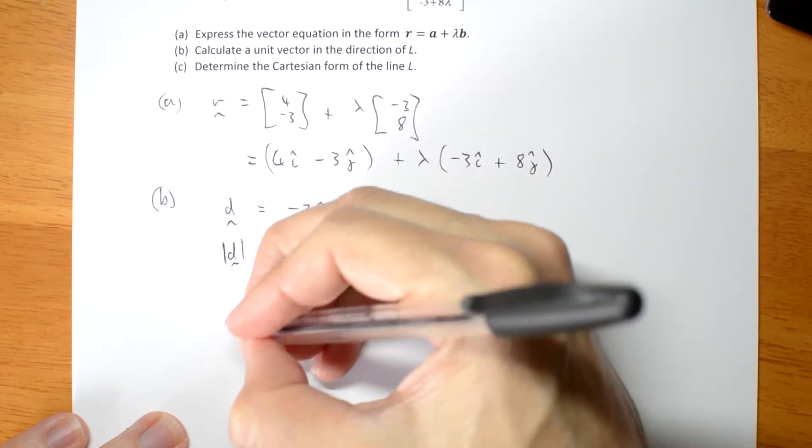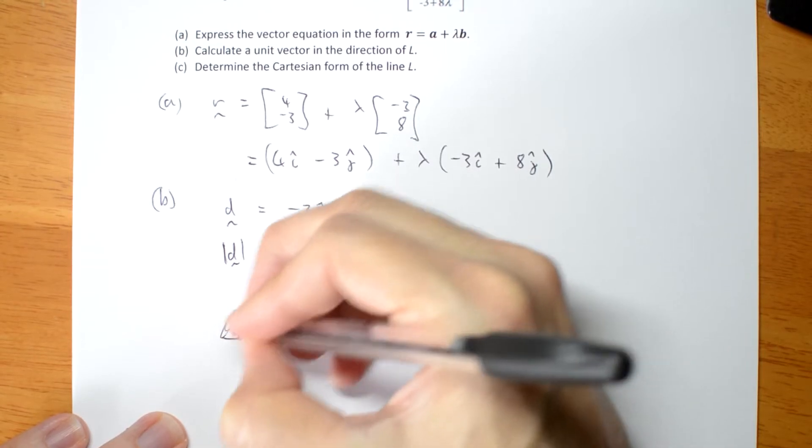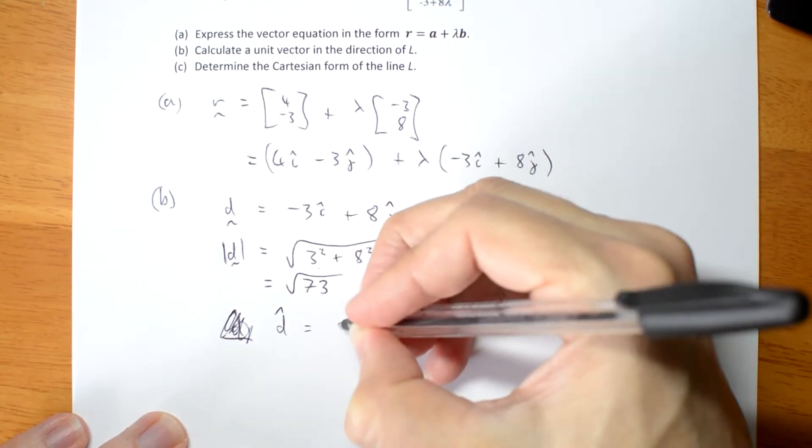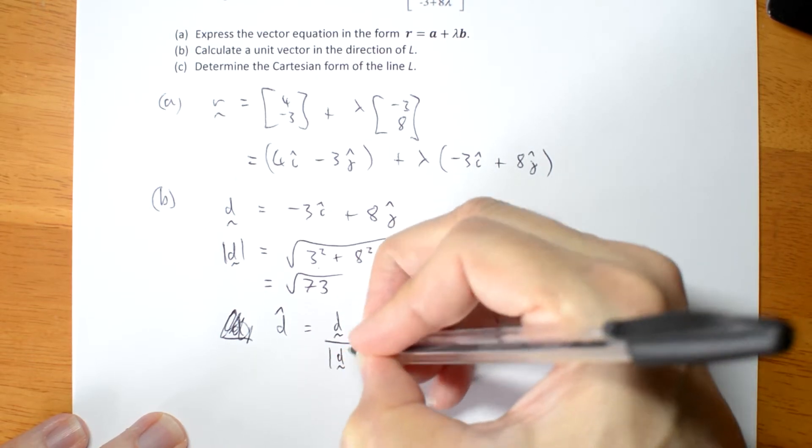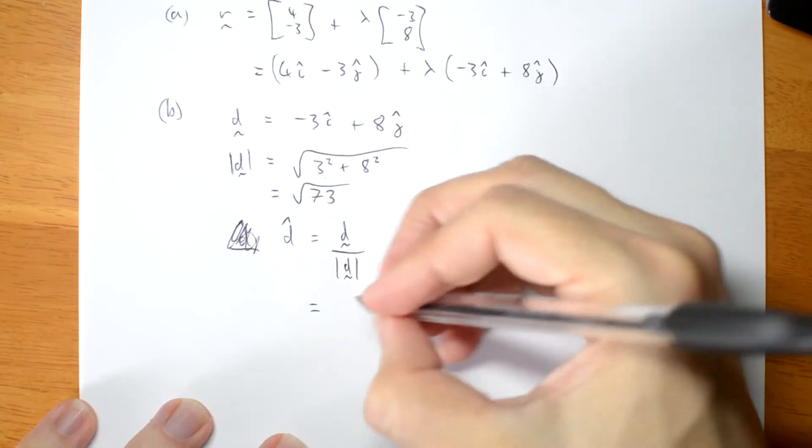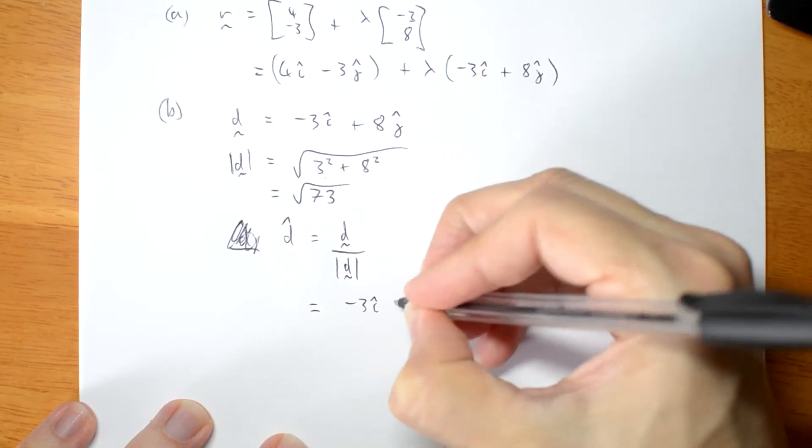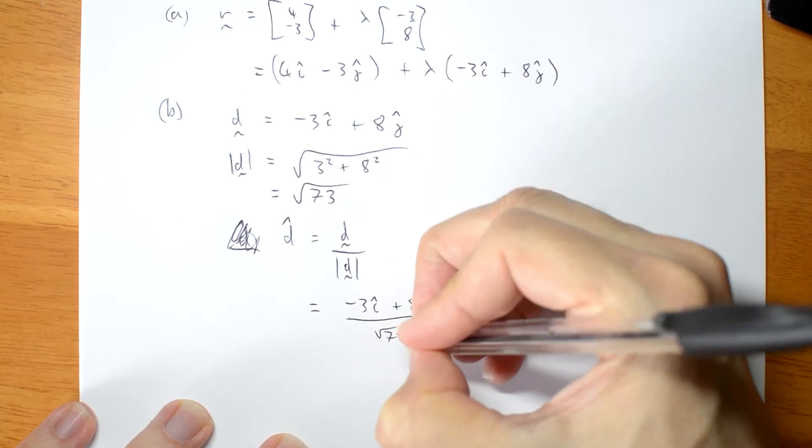So then, a unit vector... I didn't write that right. A unit vector in the direction of the line is that vector, minus 3i plus 8j, divided by its length, which is minus 3i plus 8j over root 73.